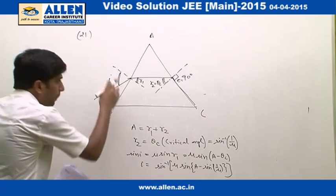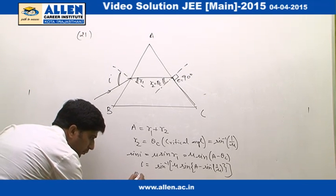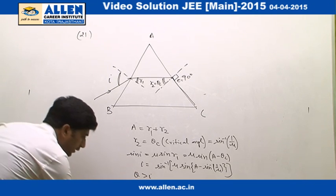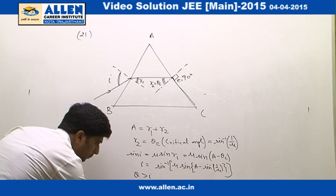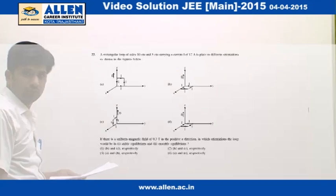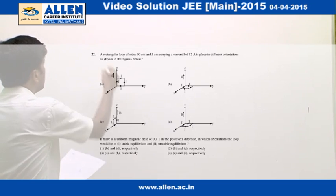It means angle of incidence must be greater than i. Therefore the correct answer is 3. And the question number 22, type of equilibrium is asked for two different loops kept in magnetic field.